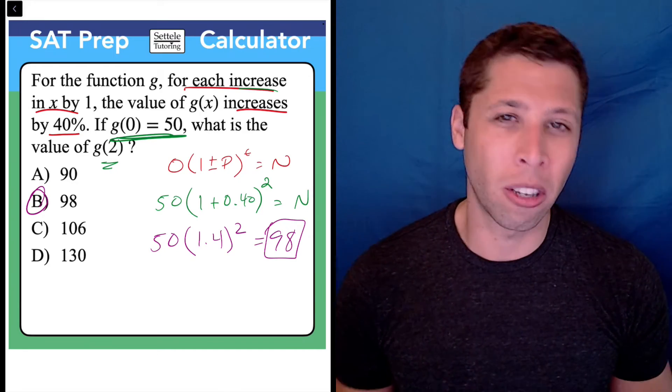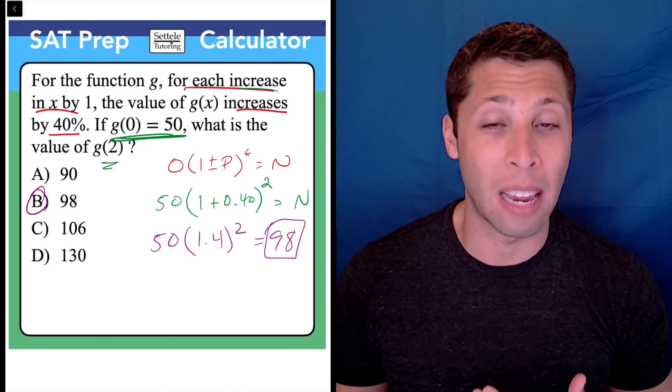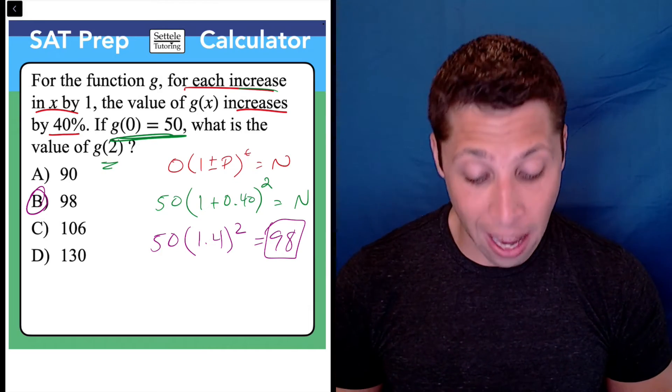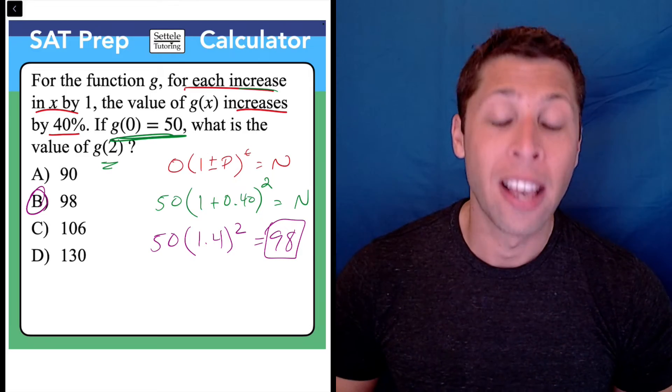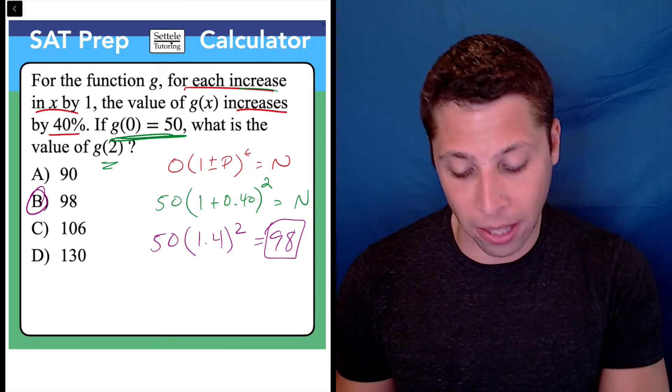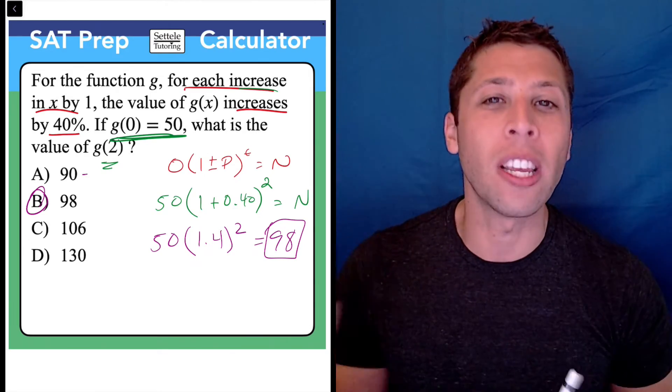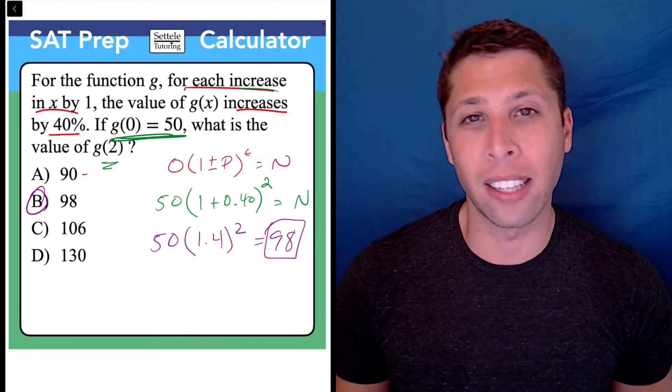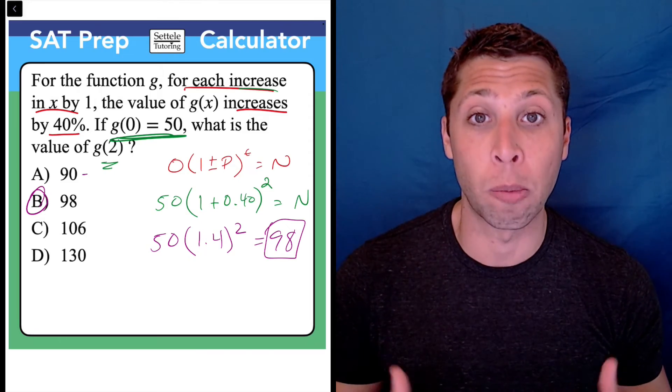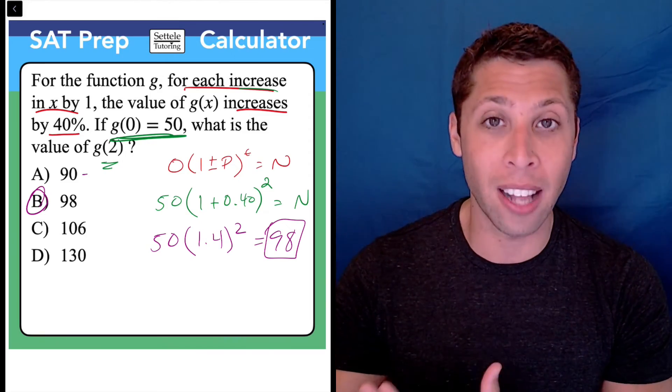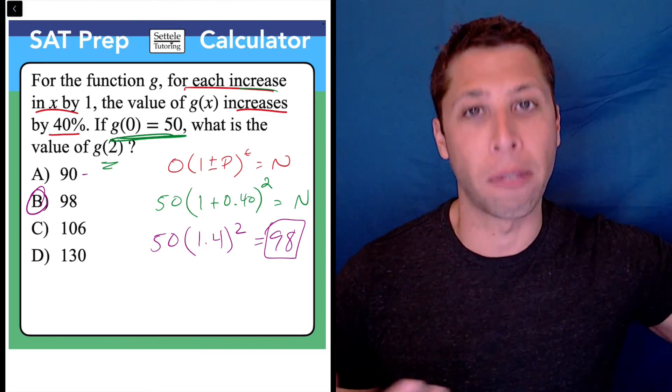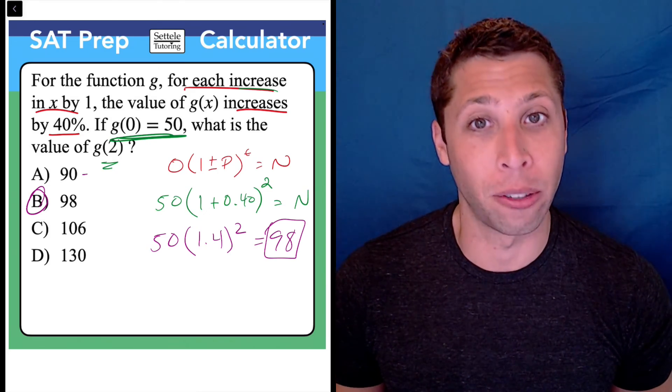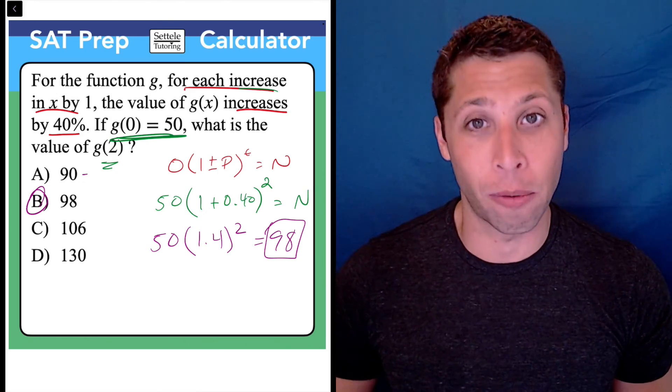All these wrong answers come from misunderstanding percentages, like just doing the same amount twice. Since 10% of 50 is 5, then 40% is 20. So 90 is a trap because you're increasing by the same amount, but that would be a linear relationship. On the SAT, questions often come down to understanding the difference between linear growth, which is constant, and exponential growth, which involves this percentage. The OPEN formula makes sure we follow those instructions exactly and put things in the right place.